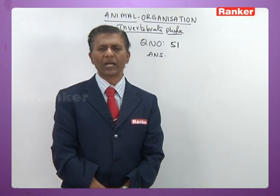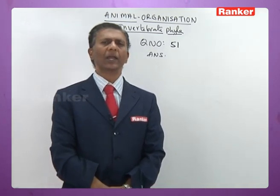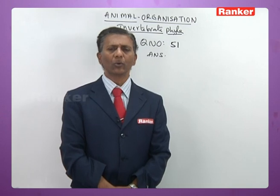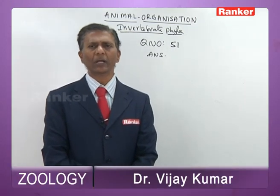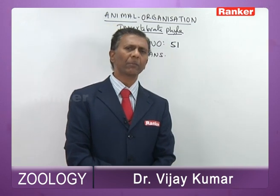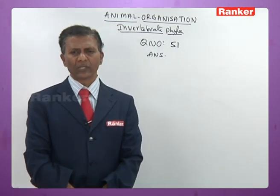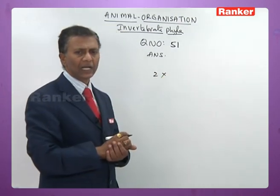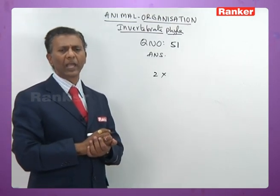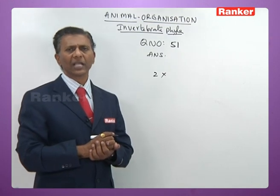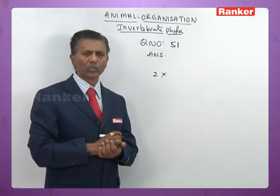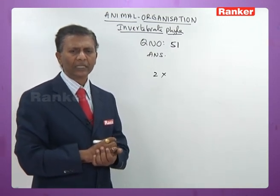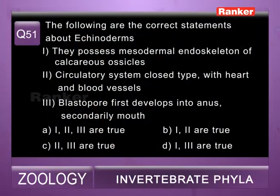Question fifty-one: correct statements about echinoderms — 1) they possess mesodermal endoskeleton of calcareous ossicles (correct — dermal ossicles act as endoskeleton made up of mesoderm), 2) circulatory system is closed with heart and blood vessels (wrong — blood vascular system is open type without heart and without respiratory pigment), 3) blastopore first develops into anus and secondary mouth (correct — echinoderms are the only invertebrates which are deuterostomians). Correct statements are one and three. So fifty-first question correct answer is d.